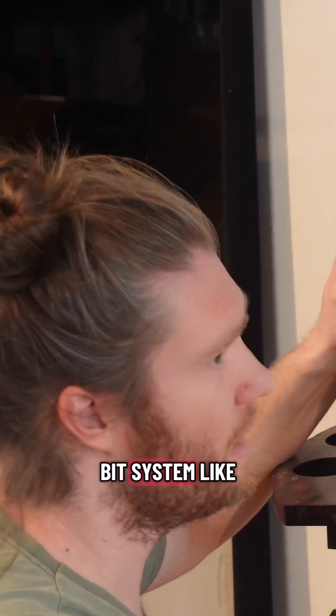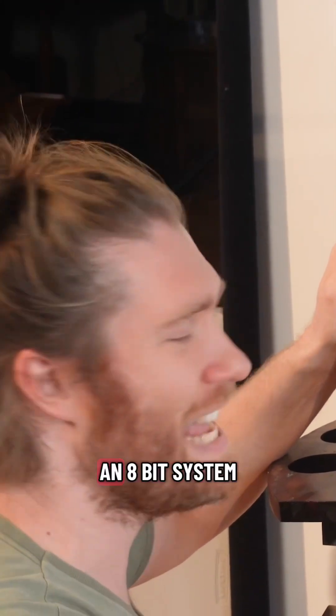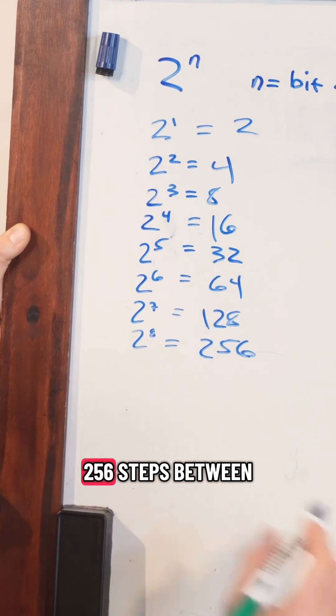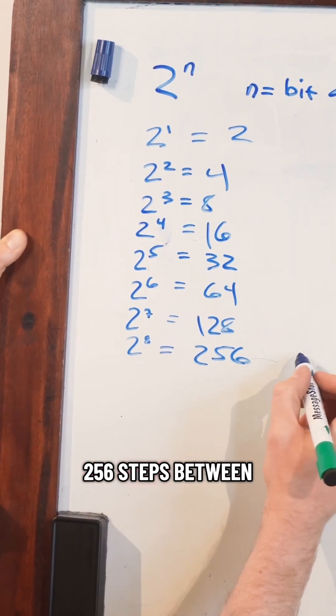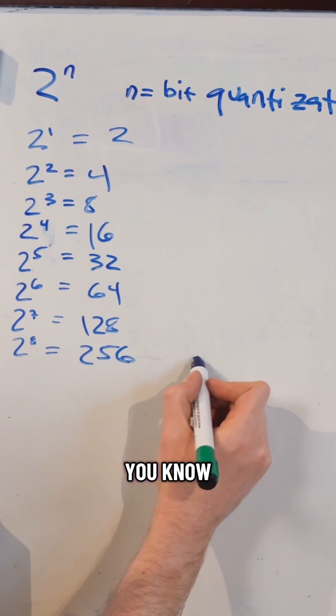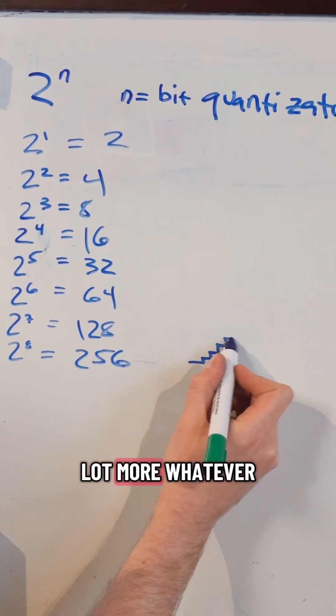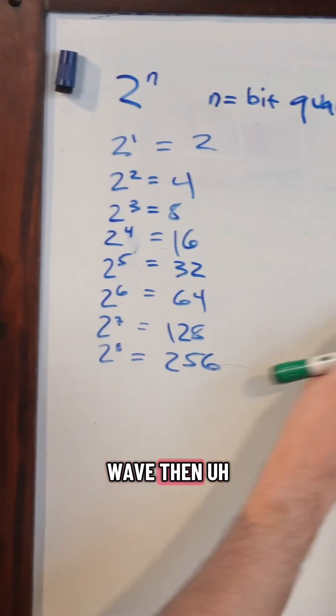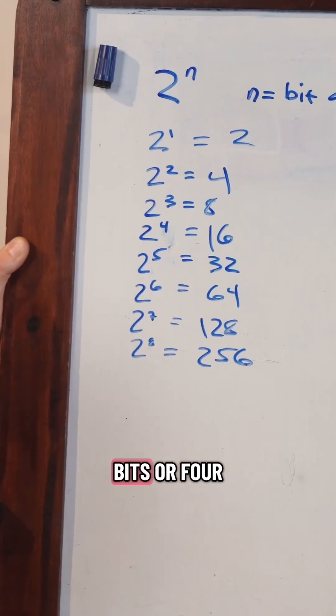It was not on a 10-bit system like the H910. It was on an 8-bit system. So there were 256 steps between zero and full scale. So 256 steps, your wave is going to look a lot more like a sine wave than one bit or two bits or four bits.